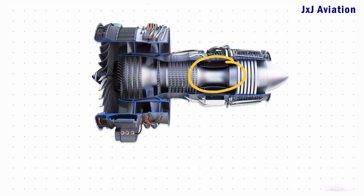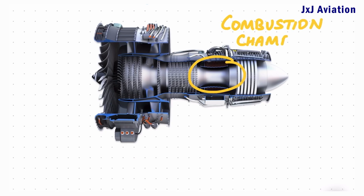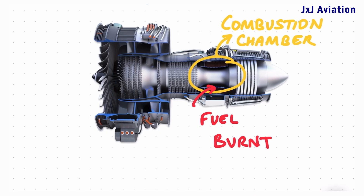The compressed air enters the combustion chamber. Here, fuel nozzles mix fuel with the incoming air, and this fuel-air mixture is burnt in the combustion chamber. This is an isobaric process, meaning it happens under constant pressure.